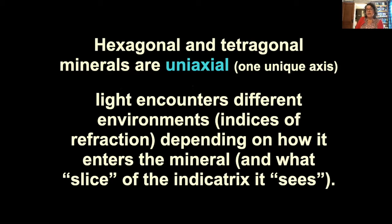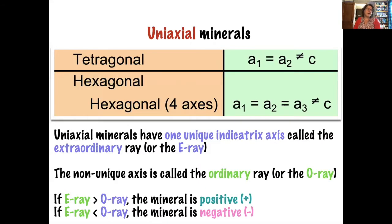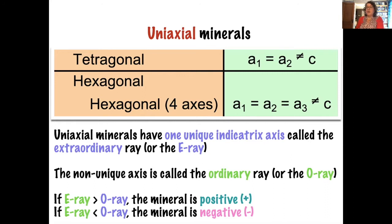Hexagonal and tetragonal minerals are uniaxial. Light encounters different indices of refraction depending on how it enters the mineral. In the crystal system, they have one unique axis; they are also uniaxial. The indicatrix has one unique axis called the extraordinary ray, or E-ray, or epsilon ray. The non-unique axis is called the ordinary ray, or O-ray, or omega ray. If epsilon is greater than omega, the mineral is positive; if epsilon is less than omega, the mineral is negative.